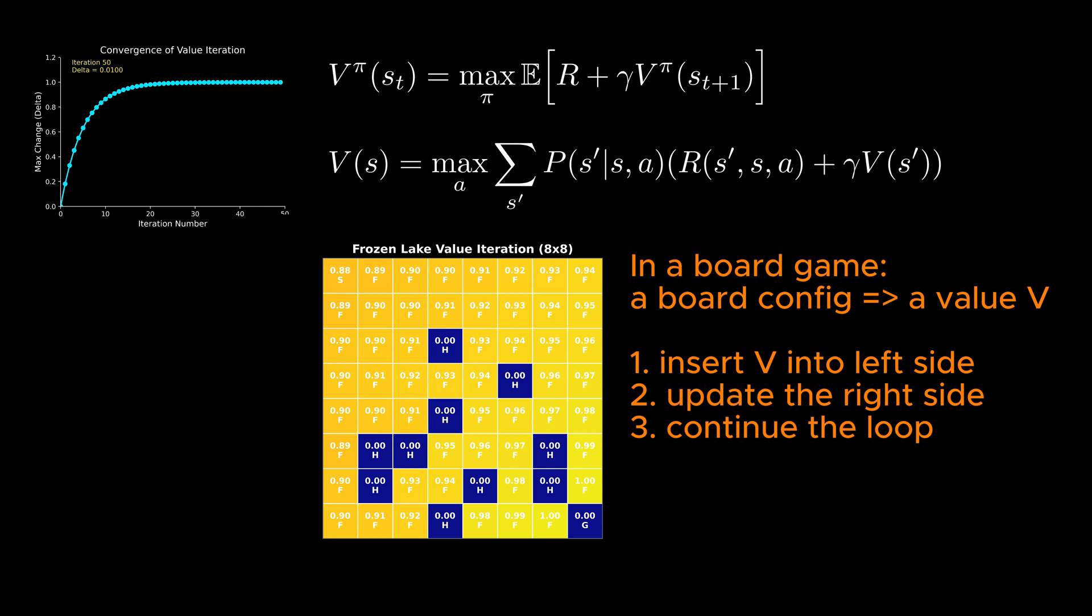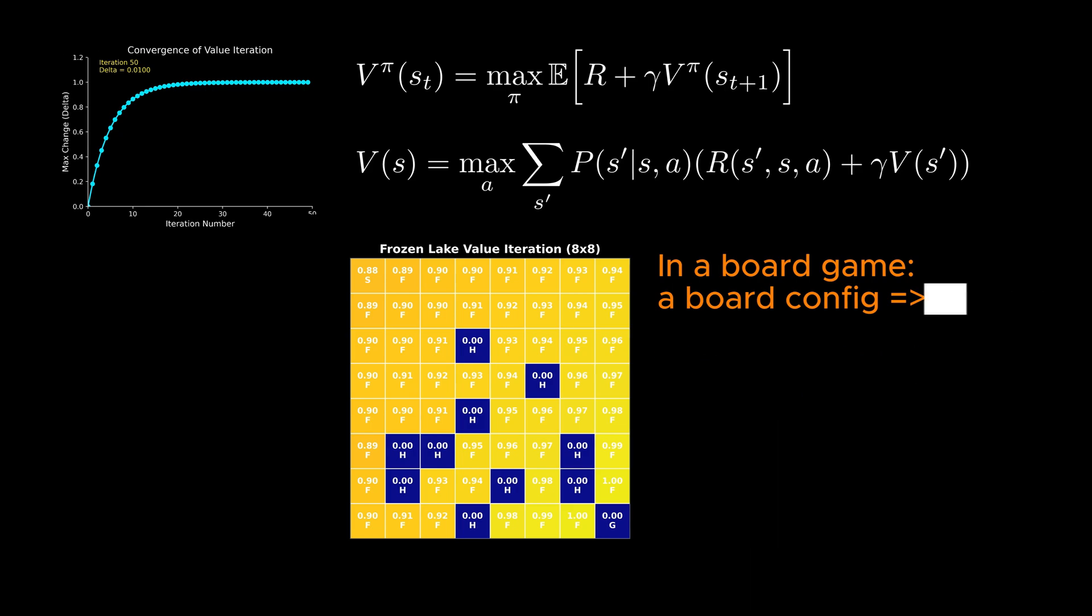The action for which the sum over states is maximum will be our choice for the updated value function. We will continue this process until the value function updates become negligibly small. The iterative algorithm that was just discussed is called the dynamic programming method and works well only if the state space is small.